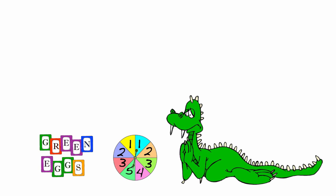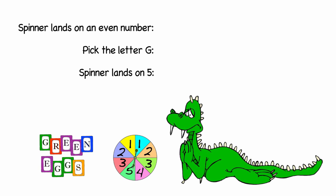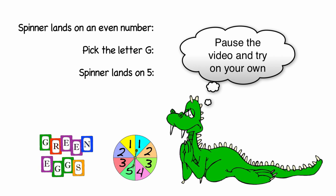What would be the probability that the spinner will land on an even number, then he'll pick a letter G, and then the spinner will land on 5? Why don't you pause the video and try the problem on your own? When you're done, unpause the video, and we'll go over it together.